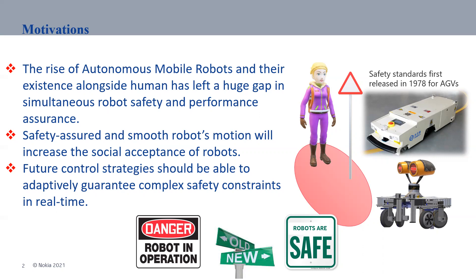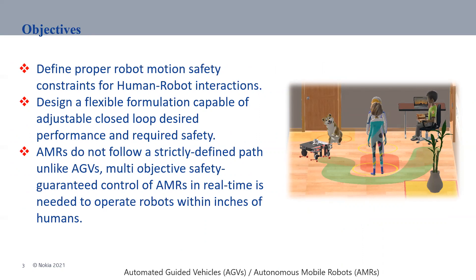The objectives of this work are: we define proper robot human safety constraints for human robot interaction, we design a flexible formulation capable of adjustable pose of desired performance and required safety, and we discuss that autonomous mobile robots do not follow a strictly defined path unlike AGVs, and multi-objective safety guaranteed control of autonomous mobile robots in real time is needed to operate robots within inches of humans.